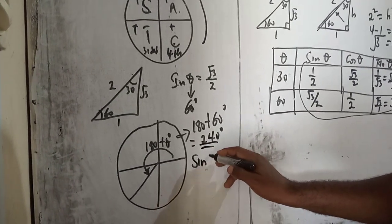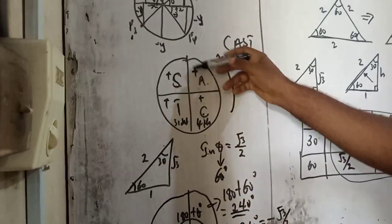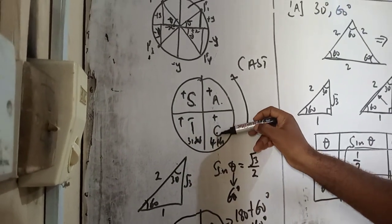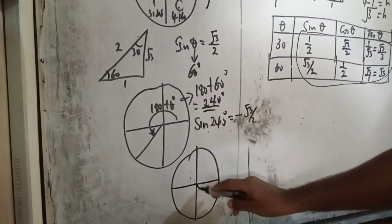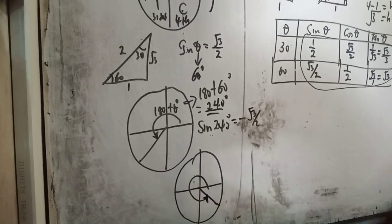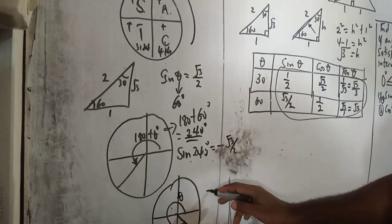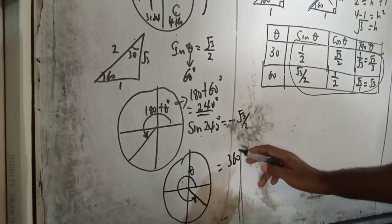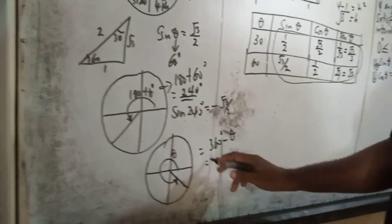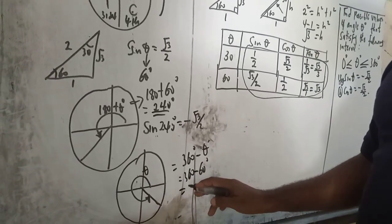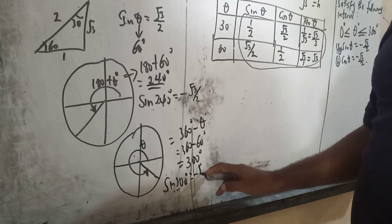If you check your calculator, sine 240 degree gives minus root 3 over 2. Now looking at CAST again, sine is also negative in the fourth quadrant. So the angle in the fourth quadrant is 360 minus 60 degrees, which is 300 degrees. So sine 300 degree also gives minus root 3 over 2. Therefore for Case A, theta equals 240 degree or 300 degree.